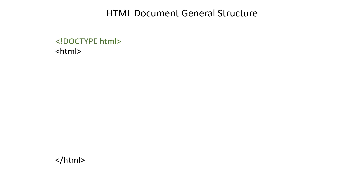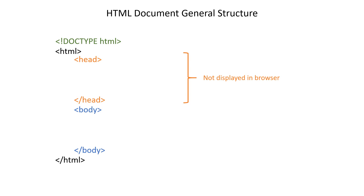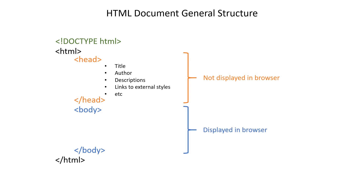Following immediately after the doctype is the HTML element, otherwise known as the root element - it's called the root element because all other elements are contained within it. Inside the HTML element there are two sibling elements: the head element and the body element. The head element is not displayed in the browser but contains information such as the page title, author, description, and links to external styles. The body element contains the actual content that is displayed - text, images, videos, links to other websites, etc.